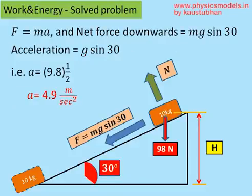To find the acceleration, we apply Newton's second law. So F equals ma. At the same time, the net force downwards is mg sin 30. Therefore, ma equals mg sin 30. M cancels and a becomes equal to g sin 30. Since sin 30 is half, that becomes 9.8 times half, which is 4.9 meters per second squared.